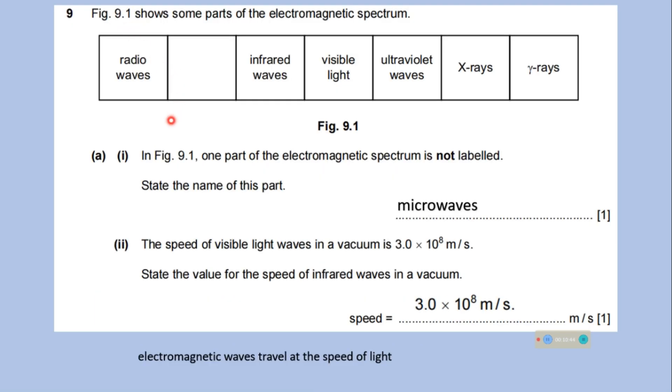The figure shows some part of electromagnetic spectrum. Here this table, and one part of the electromagnetic spectrum is not labeled. State the name of this part. So after radio waves, it is microwave, then infrared, visible, ultraviolet, X-rays and gamma rays.